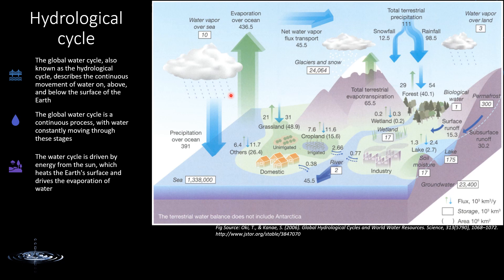Flux means the continuous flow, whereas storage means the amount of water stored at one particular location. Precipitation is flux because it is the flow. Similarly, evapotranspiration is also flux, but the water quantity at one time — in the form of water vapor in the atmosphere or in the ocean — is storage.